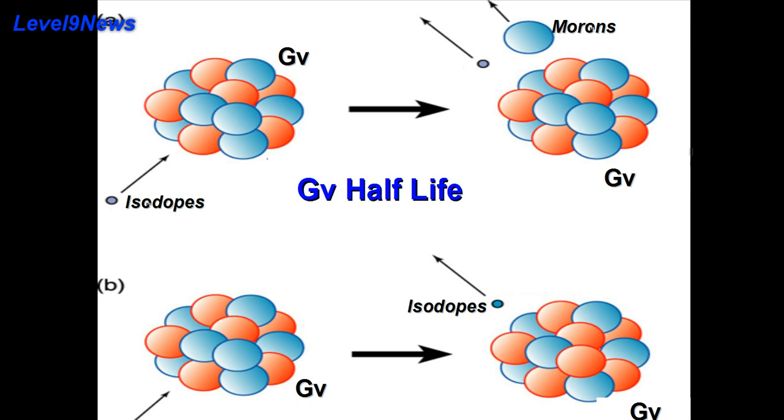In fact, Governmentium's mass will actually increase over time, since each reorganization will cause more morons to become protons, forming toxic isotopes.